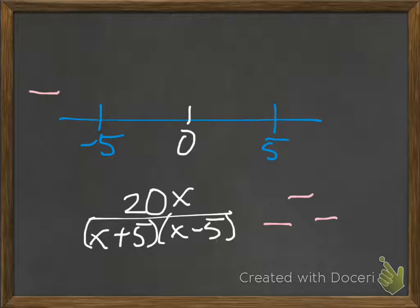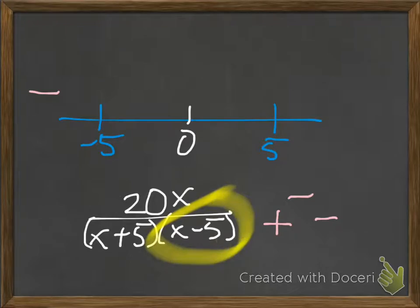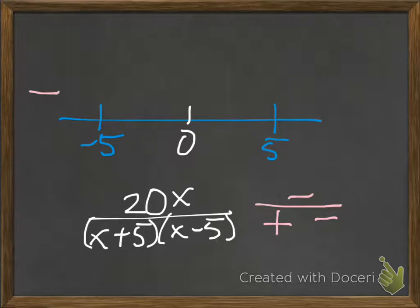Now I want to test something in between minus 5 and 0 — like minus 1. When I put minus 1 in my numerator, I get a minus. When I put minus 1 in the denominator factor x plus 5, minus 1 plus 5 is positive 4 — a positive. Then minus 1 in x minus 5 gives minus 6, which is minus. So a minus divided by a plus times a minus — that's two minuses — gives me a positive value for my function.